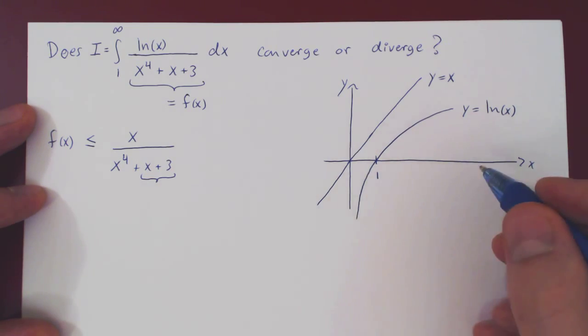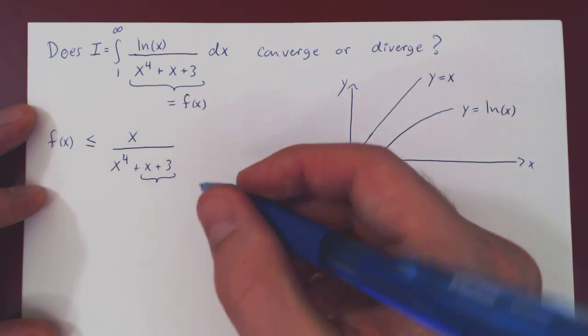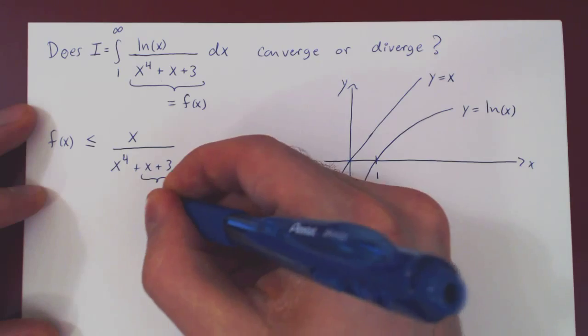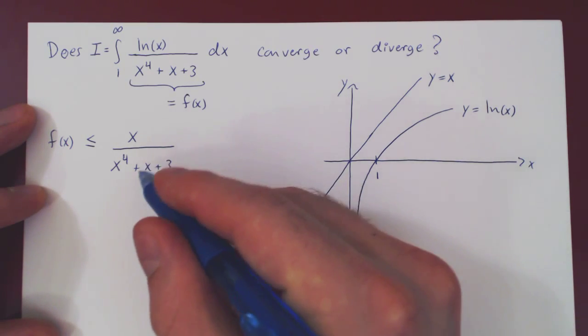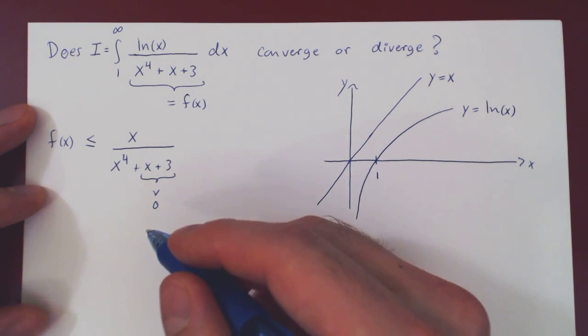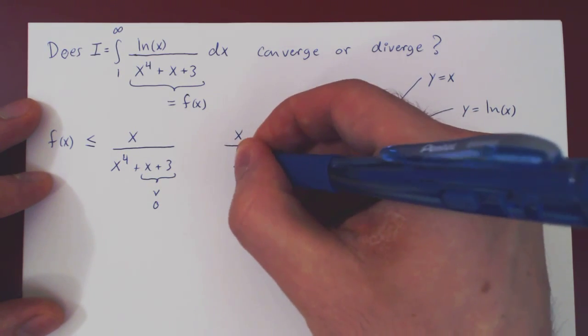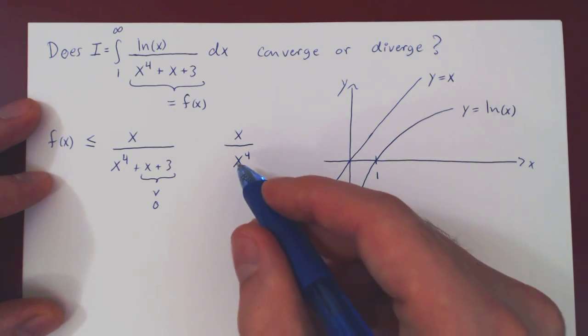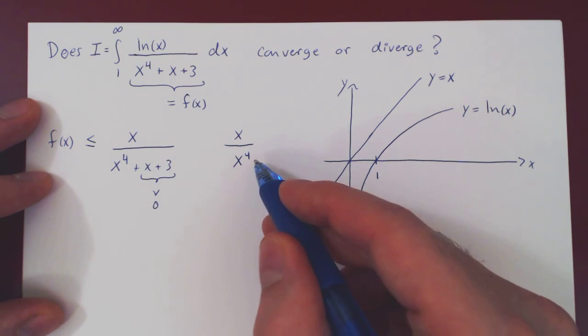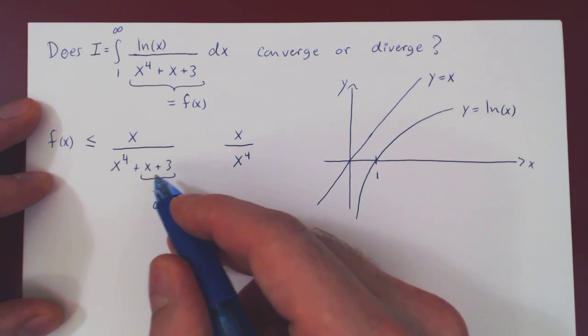As x is larger than 1, x plus 3 is positive. And we could ask, well what if we drop x plus 3? Then we have the fraction x over x to the 4. Because this is positive, x to the 4 is smaller than x to the 4 plus x plus 3.